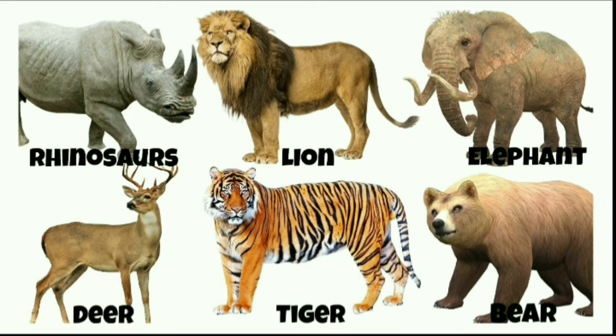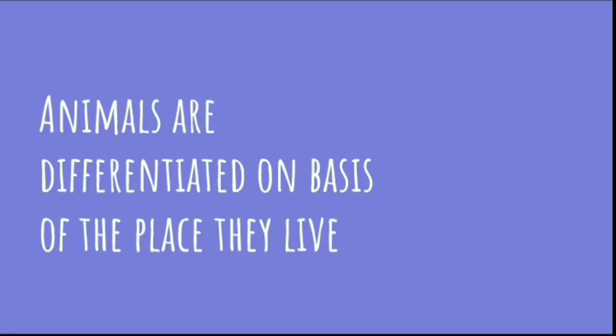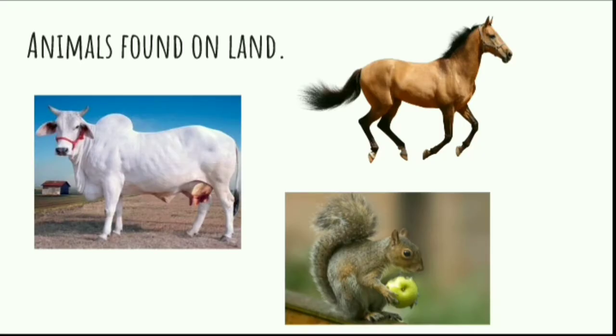Animals are placed in different groups. They can be differentiated according to the place they live or are found. Animals found on land, like the cow, horse, and squirrel — these animals are found on land.